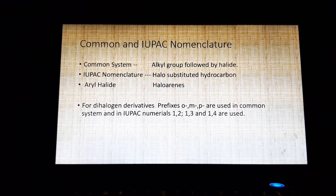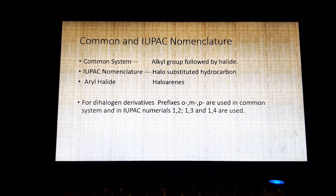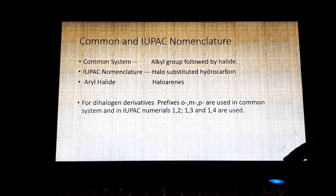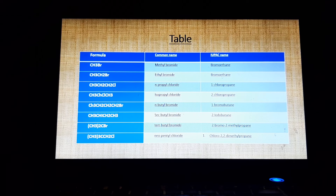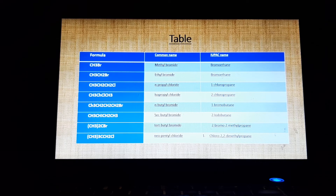There are two systems of nomenclature of halogen derivatives: common system and IUPAC system. In the common system, alkyl group is followed by the halide name. In the IUPAC system, they are named as halo-substituted hydrocarbons, and aryl halides are also known as haloarenes. A table shows common and IUPAC names: CH3Br is methyl bromide / bromomethane; CH3CH2Br is ethyl bromide / bromoethane; CH3CH2CH2Cl is n-propyl chloride / 1-chloropropane; CH3CH(Cl)CH3 is isopropyl chloride / 2-chloropropane.